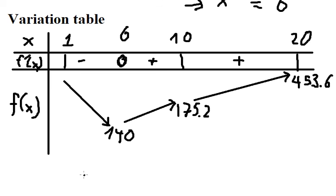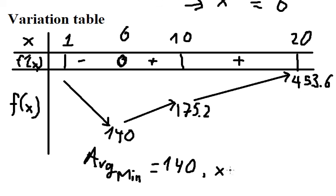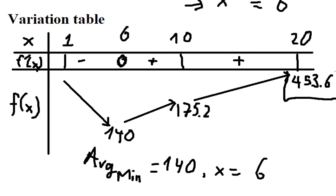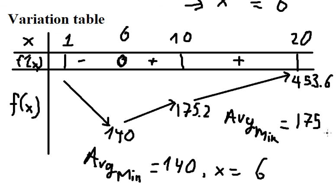On the interval from 1 to 10, the minimum value is 144 when x equals 6. On the interval from 10 to 20, 175.2 is smaller than 453.6, so the minimum on that interval is 175.2 when x equals 10. These are the answers for part a and part b. Thank you for watching.